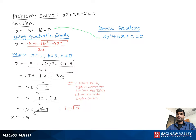Then we get x equal to negative 5 plus square root 7 i, over 2, or x equal to negative 5 minus square root 7 i, over 2. These are the two solutions of the given equation.